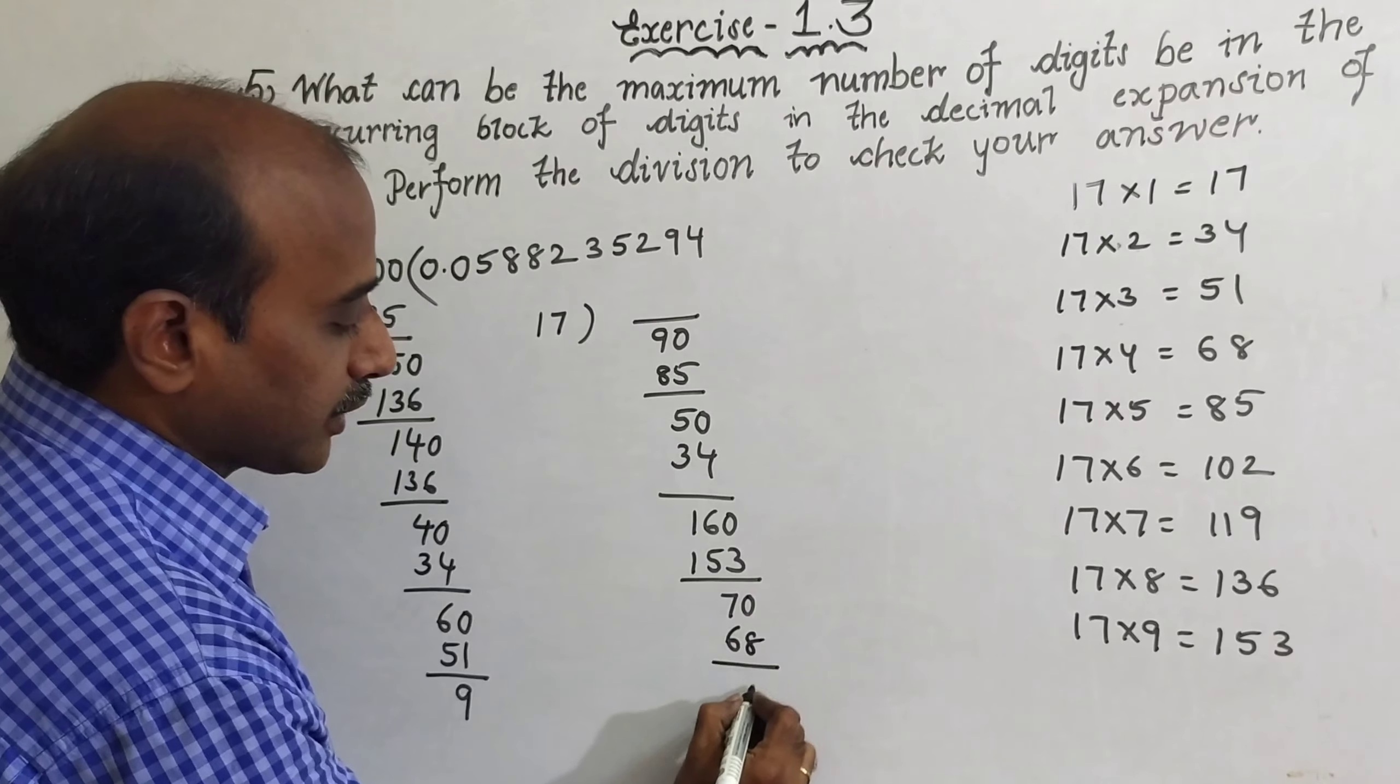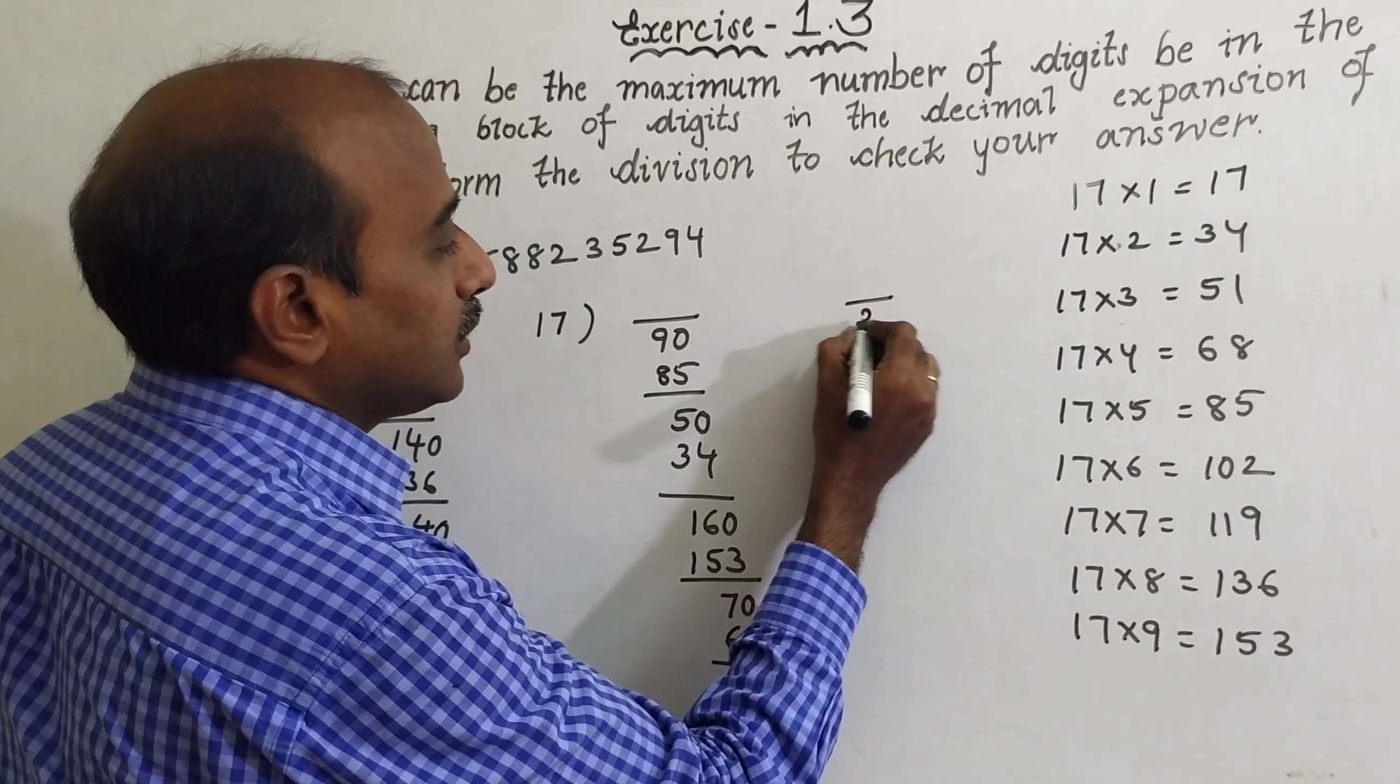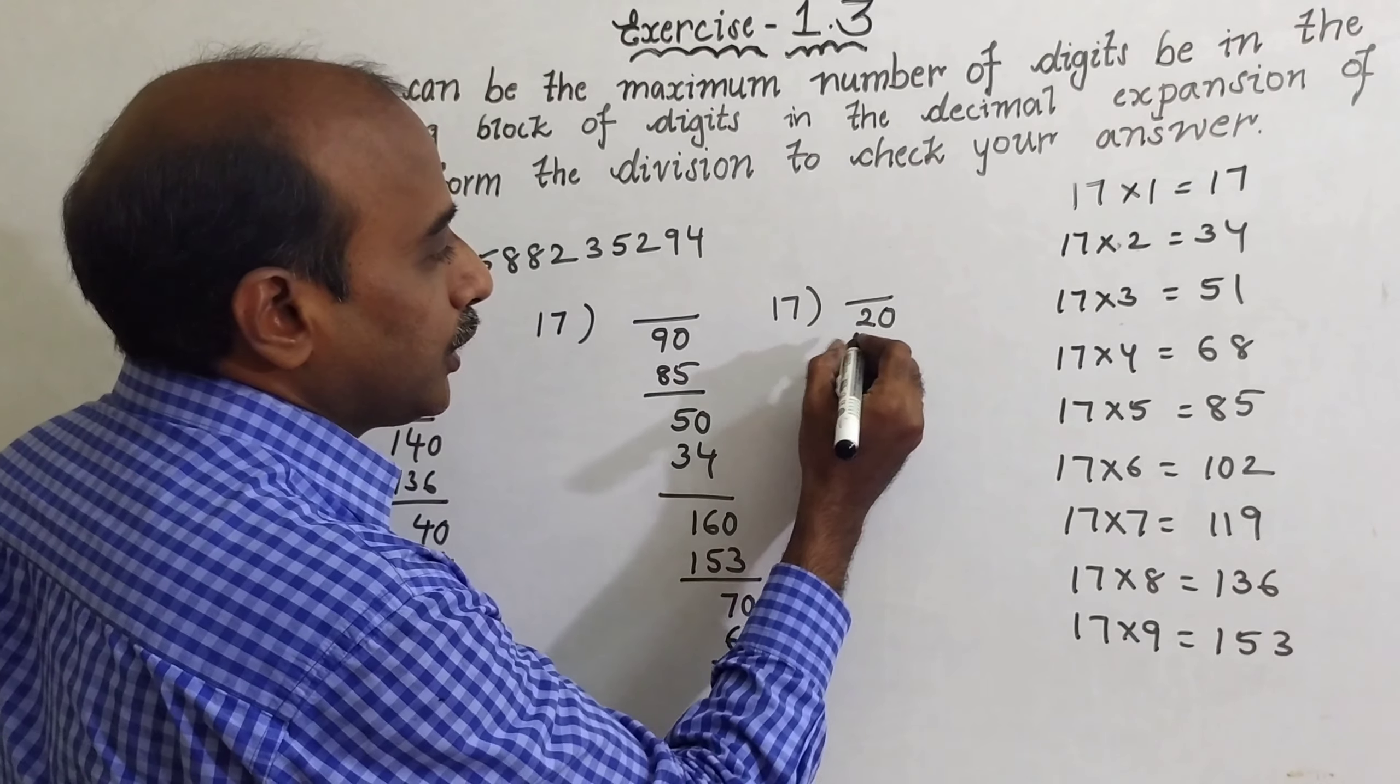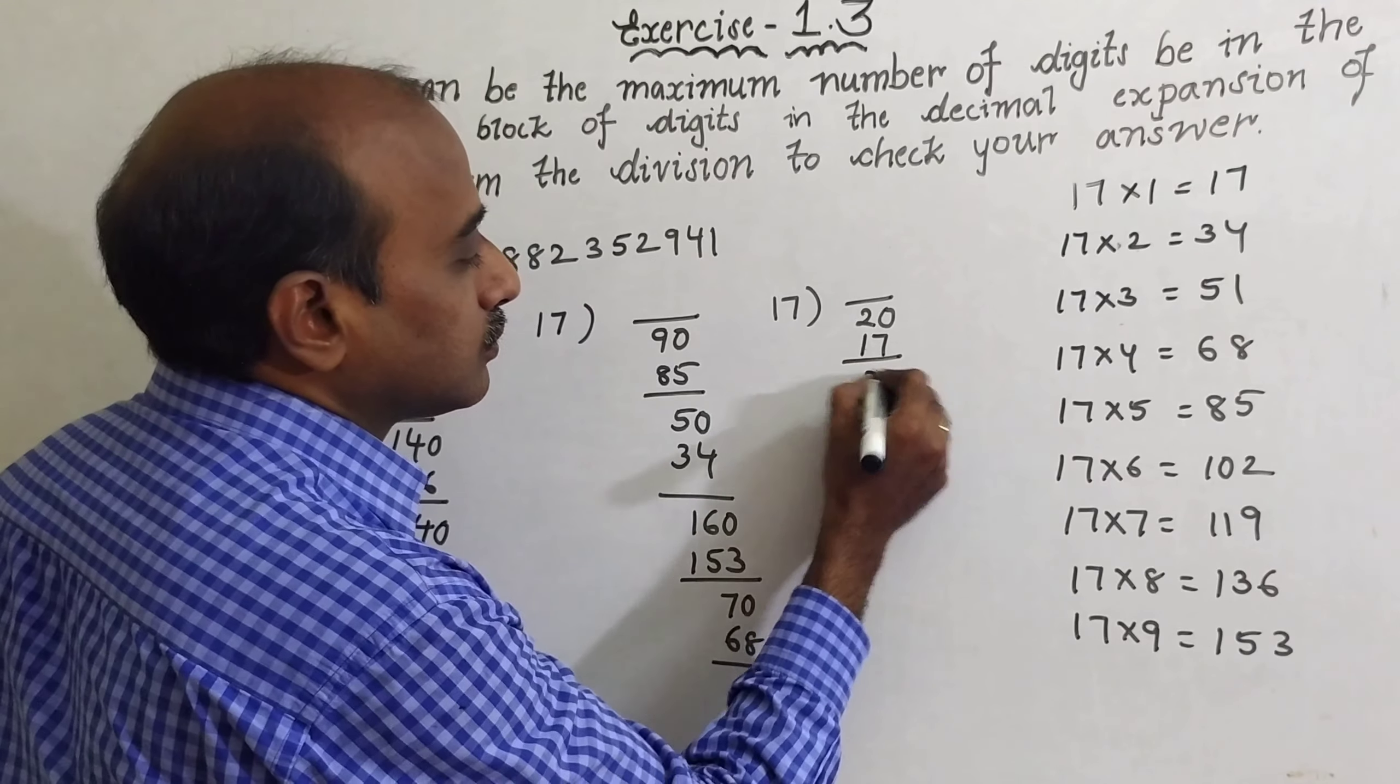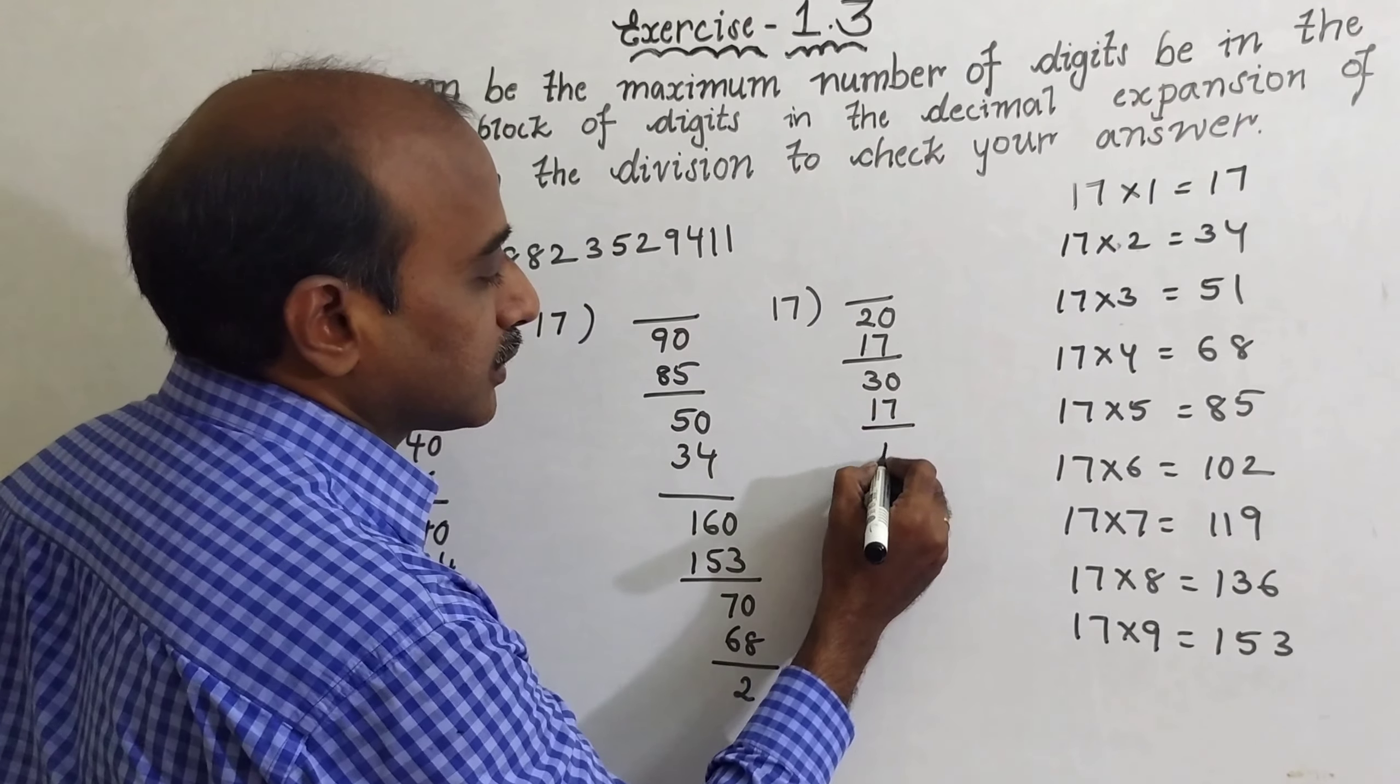So I will do again here, 2 divided by 17, take 0. 20 means 17 times 1 is 17. So 30. 17 again times 1 is 17. Subtract 13.